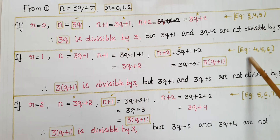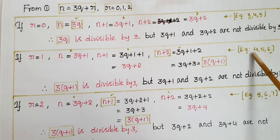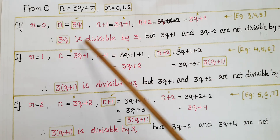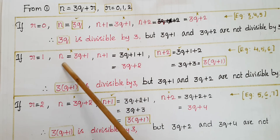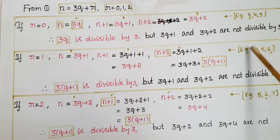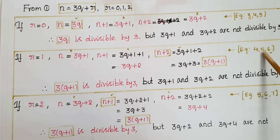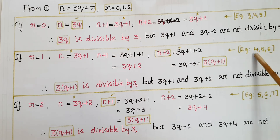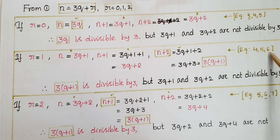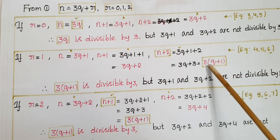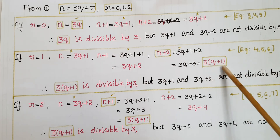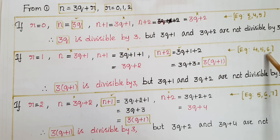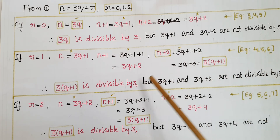For example, if q = 1 then n = 4. The next positive integer is 5 and the next one is 6. Out of 4, 5, 6, only 6 is divisible by 3.